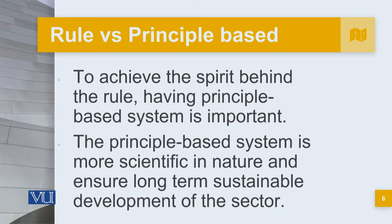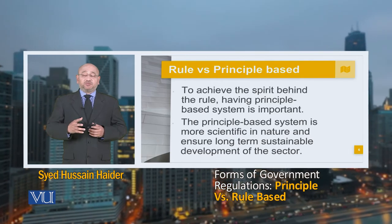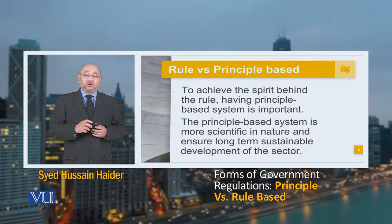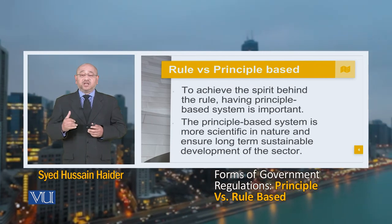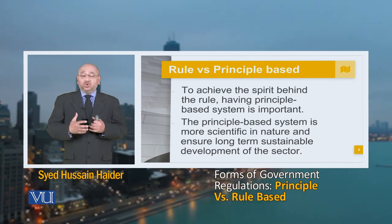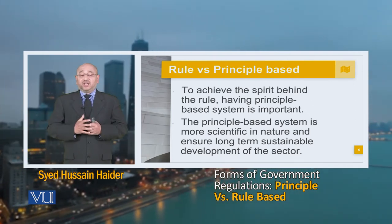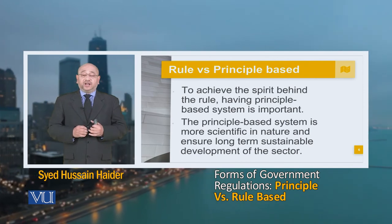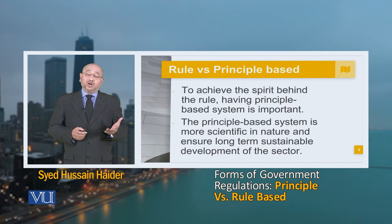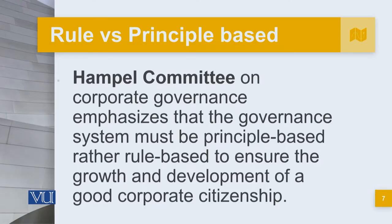The principle-based system is more scientific in nature and ensures long-term sustainable development. In the principle-based system, it is more sustainable and more long-term because it is inculcated in the philosophy of the organization — it is values-based, behavioural, and attitude-based. Rules are more paper-based, more straight-jacketed, and more stringent. Therefore, based upon changing circumstances, rules would be changing while principles change very slowly. The Hample Committee on corporate governance emphasizes that the governance system must be principle-based rather than rule-based to ensure the growth and development of good corporate citizenship. The Hample Committee emphasized the importance of principle-based governance because the longevity of a rule-based system would be very short-lived, while the principle-based system endures far longer.